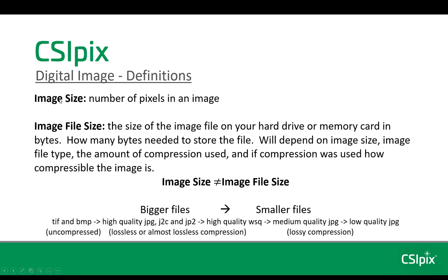Image size equals the number of pixels in an image. Image file size is a different thing — it's the size of the image file on your hard drive or memory card. It's how many bytes are needed to store the file. The number of bytes needed will depend on a number of things, including the image size, the image file type — so bitmap, TIFF, JPEG, that kind of thing — the amount of compression used, if any, and if compression was used, how compressible an image is. For example, images with a lot of black areas would be easy to compress and would make much smaller files than ones that have a lot of sharp edges and noise.